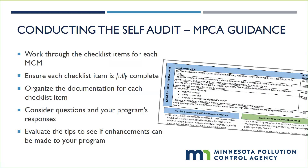At the end of each section of the MPCA self-audit checklist, there are general, broad questions to think about regarding your program, similar to ones that may be asked by an MPCA auditor. Honestly answer these questions and consider what your responses reveal about your program and whether enhancements can be made. Similarly, each section has tips on how to enhance your program — although they may be beyond the MS4 general permit requirements, implementing them may further strengthen your stormwater program. Consider the tips to see if you can implement any of them.